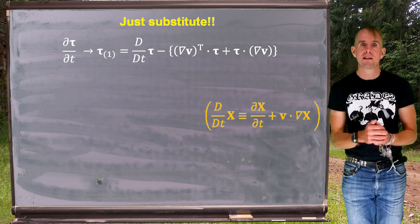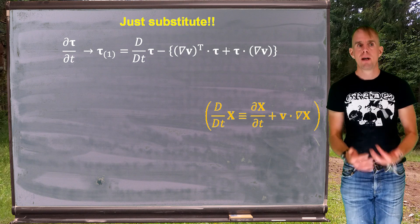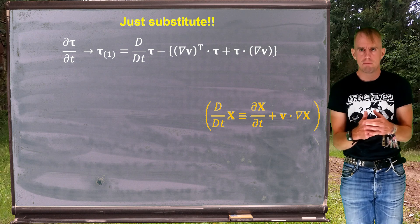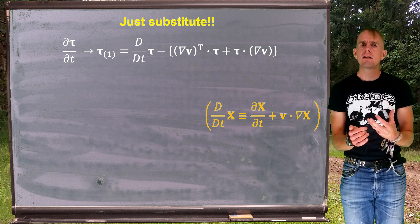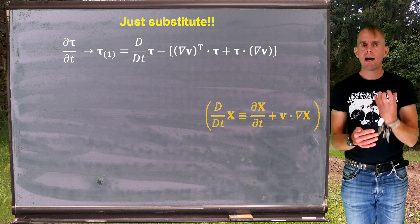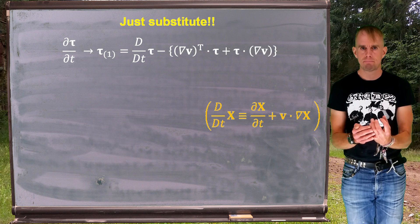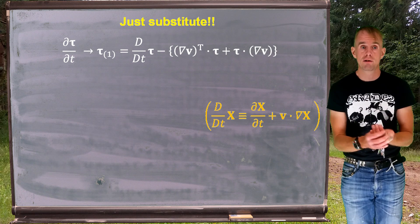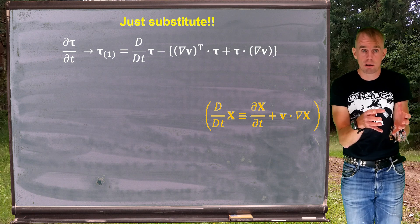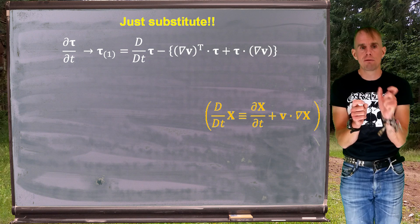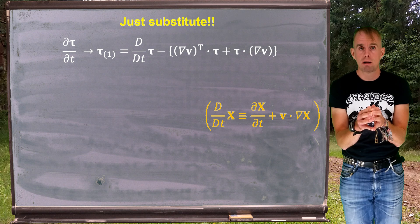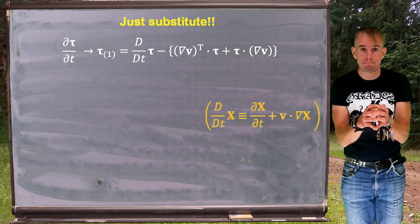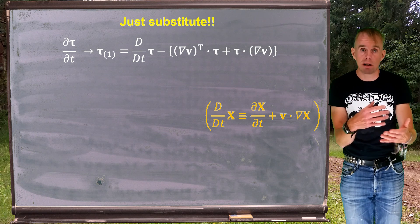Another property of this upper convected time derivative is symmetry. Remember, right back in lecture one, we examined the symmetry of the stress tensor. And we said that for our purposes, it's always going to be symmetric. So that anything that gives rise to the calculation of a stress tensor has to preserve symmetry. That total derivative, big D by dt of tau, preserves stress tensorial symmetry because it's just a partial time derivative of something symmetric. And if you think about it, that dot product term, v dot grad tau, will also be symmetric because the grad tau is just going to be the gradient of a symmetric quantity. So the dot product of that with a vector will give a symmetric quantity.